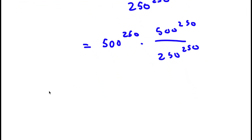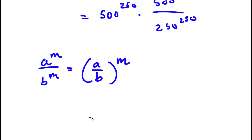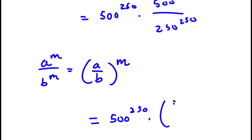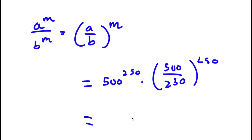If I have something in the form a to the power of m over b to the power of m, this is the same thing as a over b to the power of m. So 500 to the power of 250 over 250 to the power of 250 can be rewritten as 500 over 250 to the power of 250. And 500 over 250 is simply equal to 2, so I have 500 to the power of 250 times 2 to the power of 250.